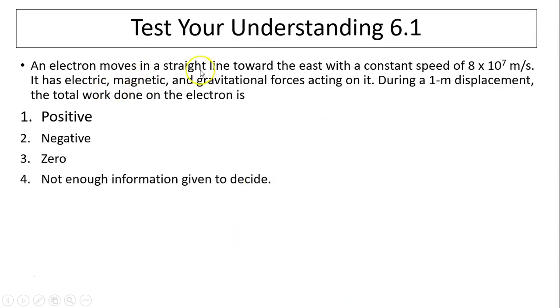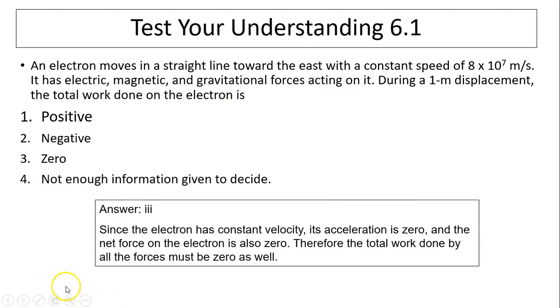Test your understanding. An electron moves in a straight line toward the east at a constant speed. It has electric, magnetic, and gravitational forces acting on it. During a 1 meter displacement, what is the total work done on the electron? Total work equals net force times displacement. Since the electron is moving at constant speed in the same direction, east, in a straight line, there is no net force. So the total work done on it must be zero. The answer is zero.